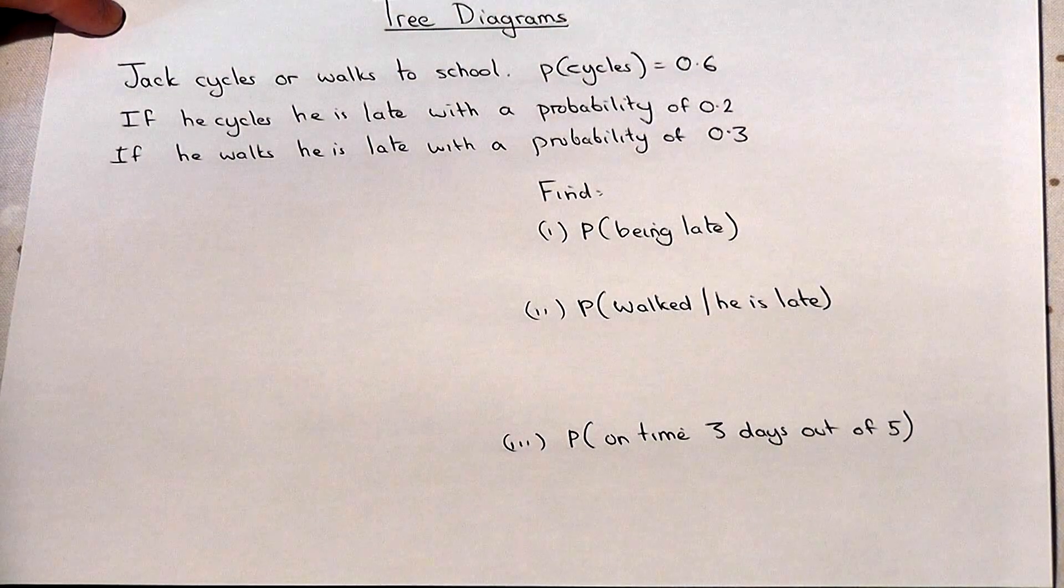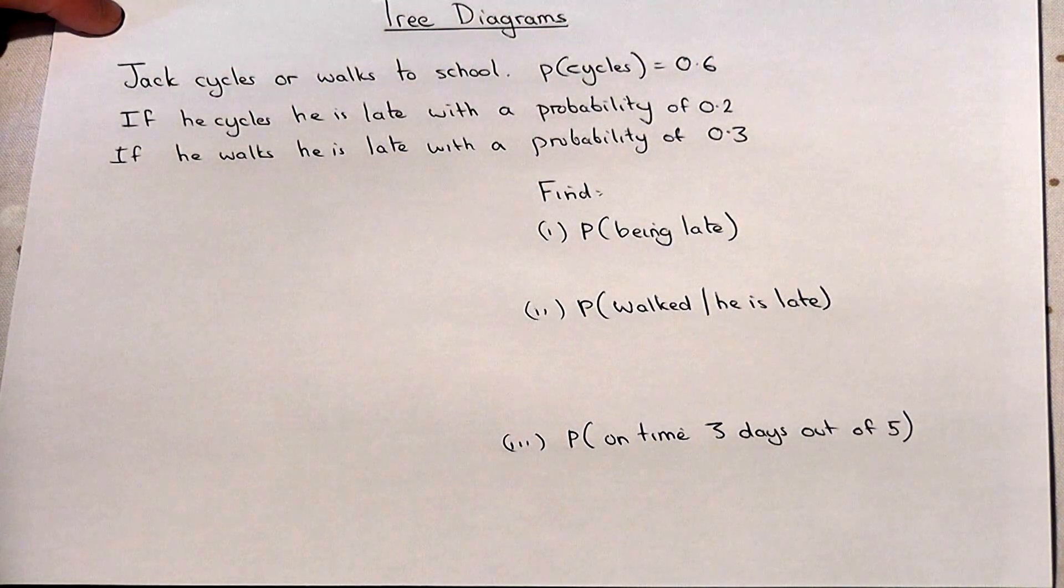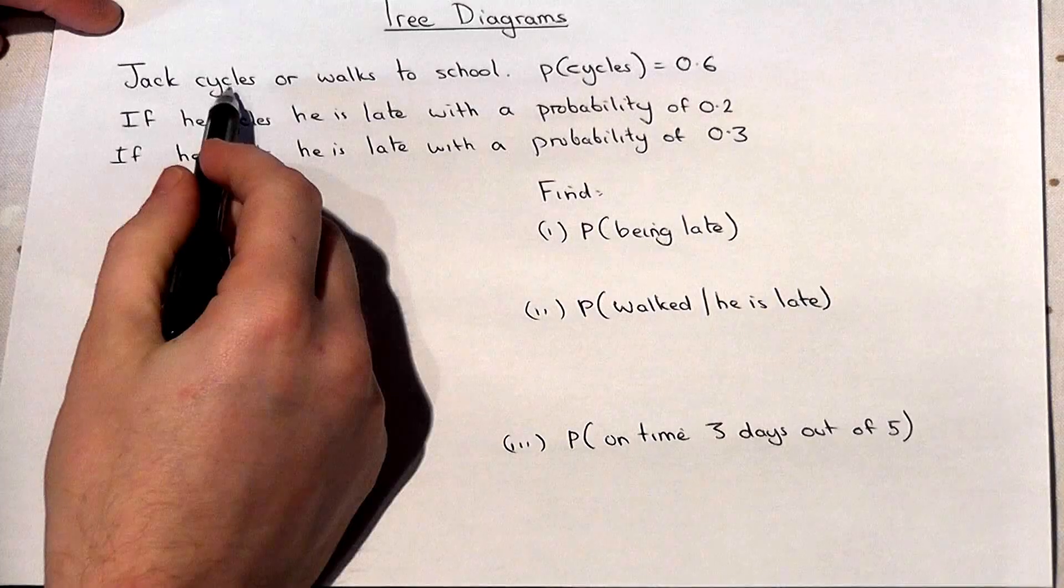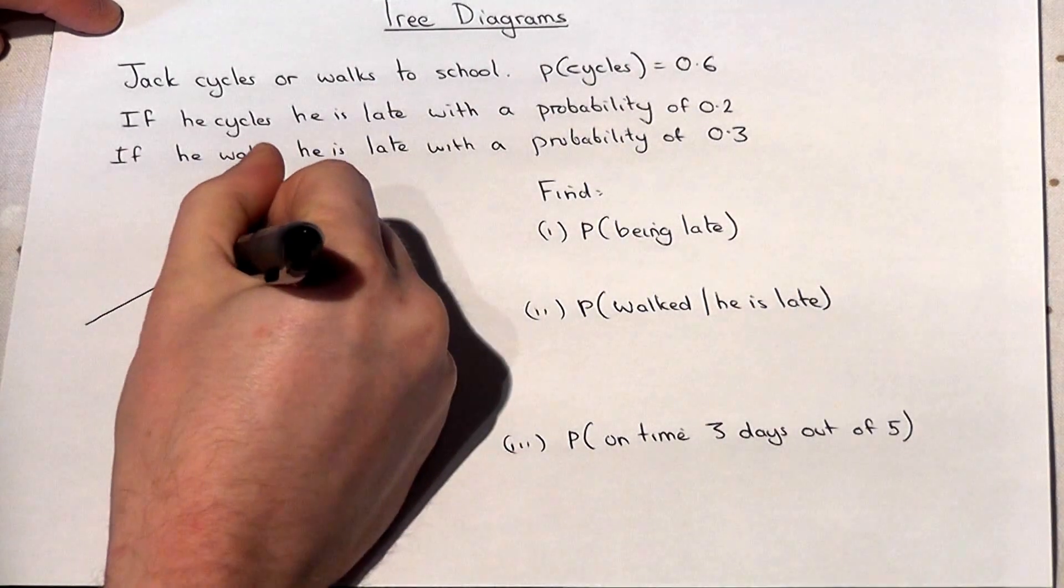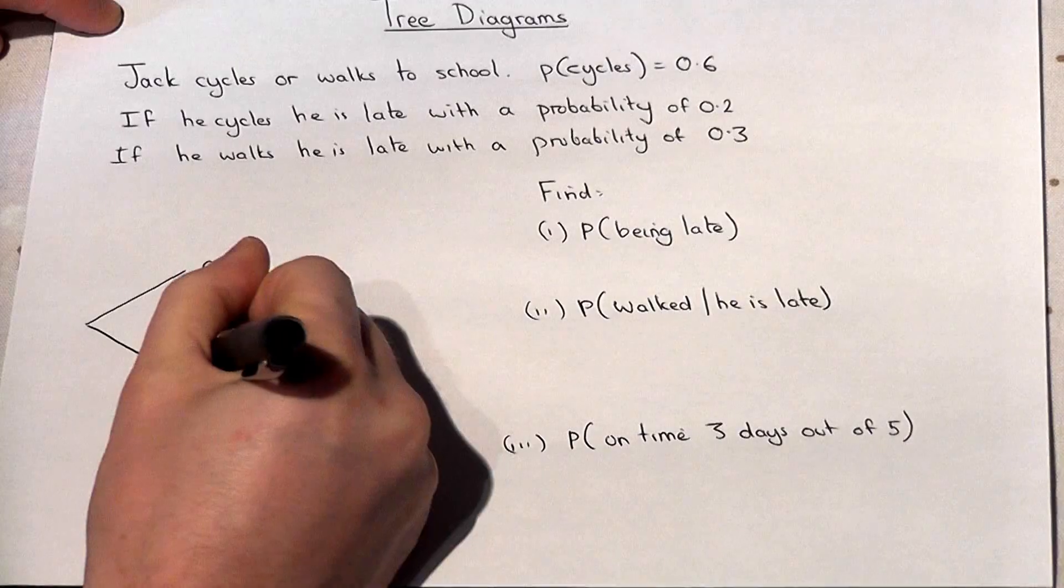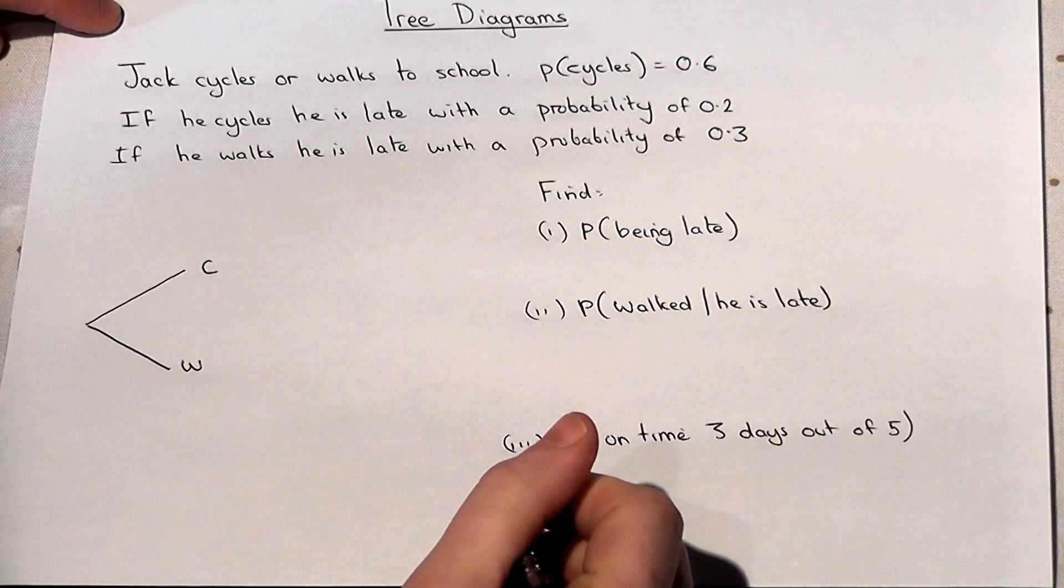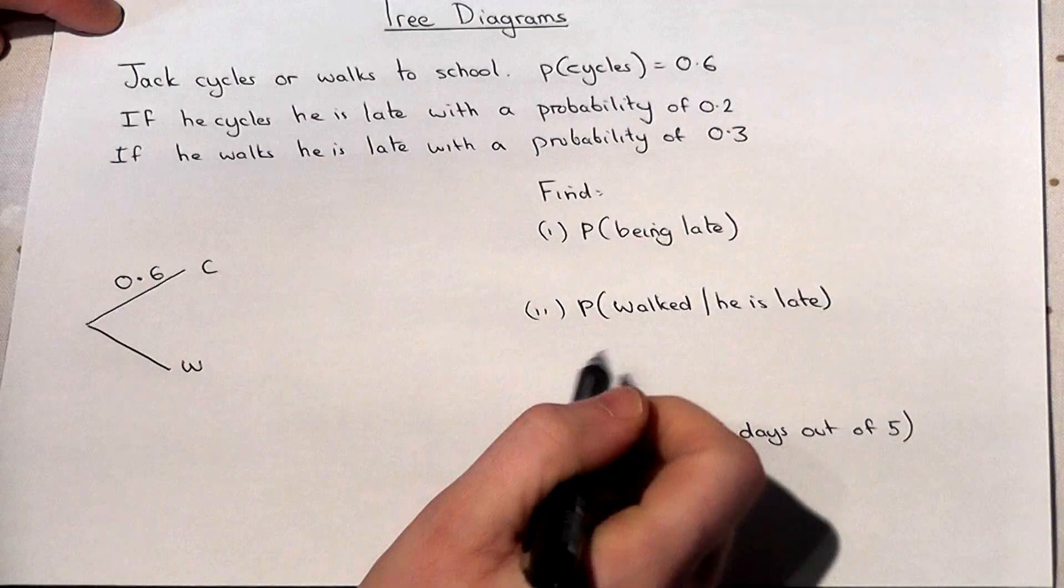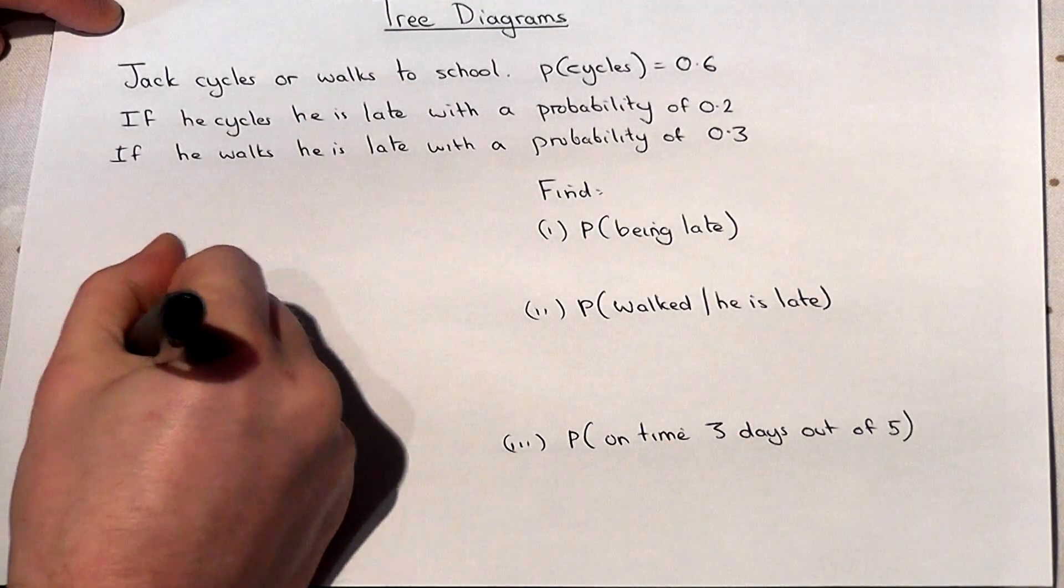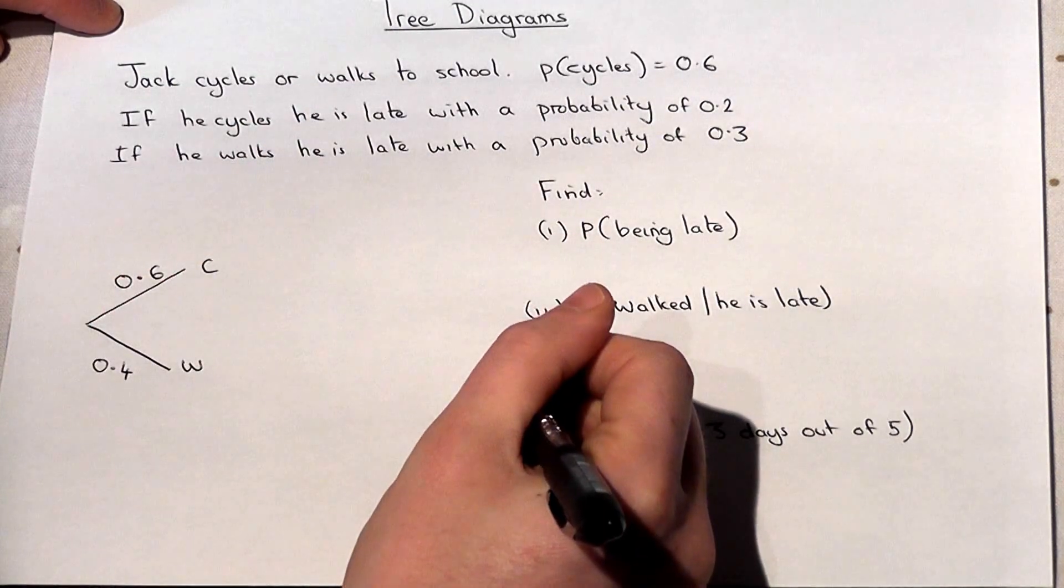This video looks at tree diagrams. In this situation, Jack cycles or walks to school and we know that the chance he cycles is 0.6. Now because there are just two options, the chance he walks is 0.4.